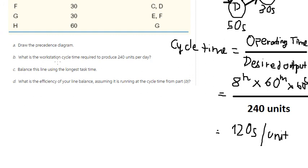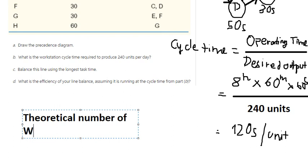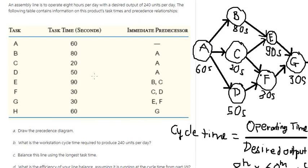Now we can find the theoretical number of workstations. So we need to find the total task time in here. We sum all the numbers in here and we have 420 seconds.